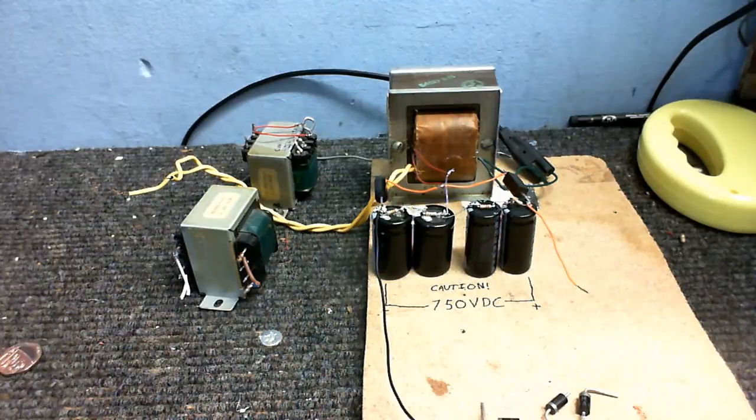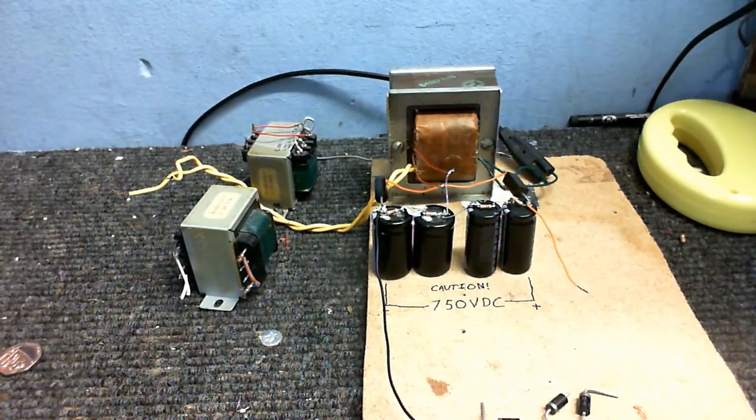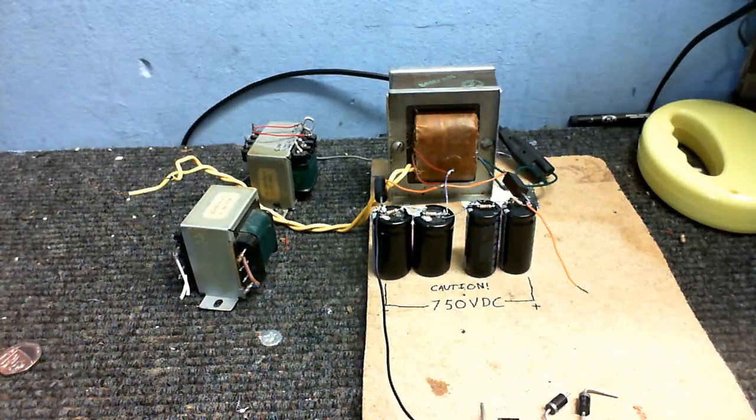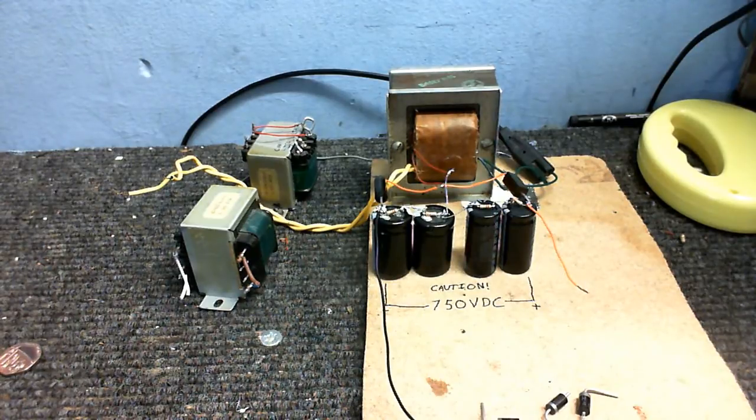But anyway, today I'm going to be building another Tesla coil circuit. And if it works, hopefully it's going to produce a nice flame-like arc instead of little purple sparks. I have no idea how it's going to work.